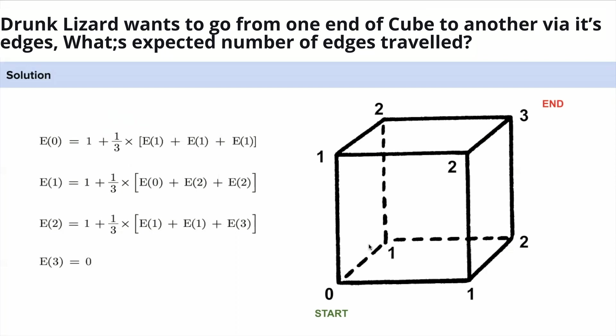Each one has equal probability to come from zero, that is 1/3. And why we have added one, because if the lizard has started walking to one then it has already covered one edge. Any of the ones, if the lizard has gone from zero it has covered one edge, that is where we have added this one.